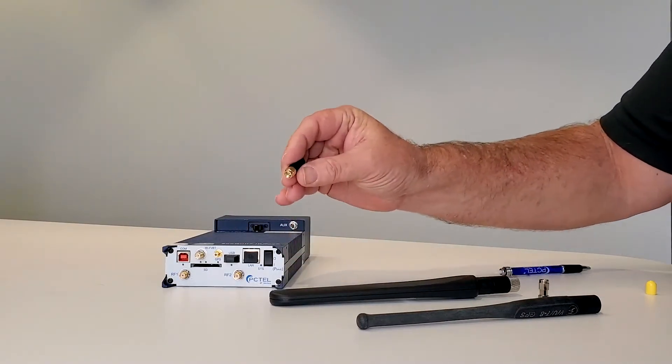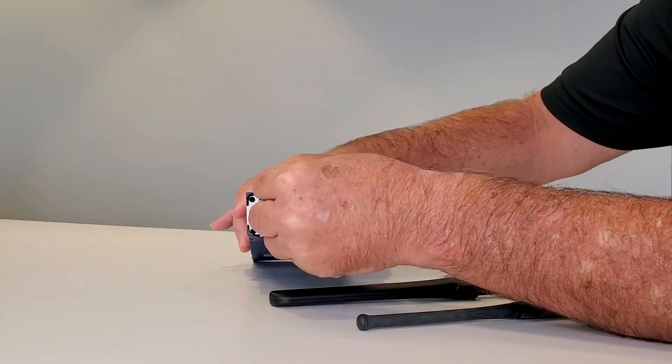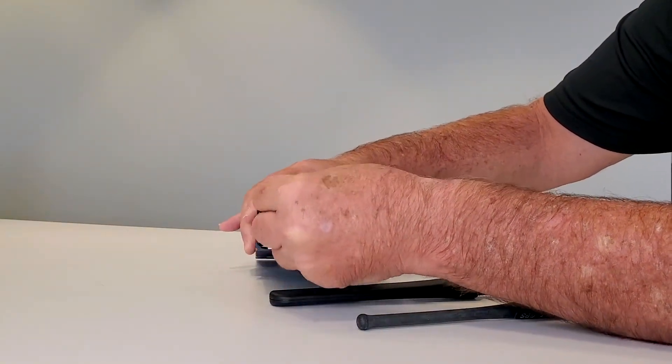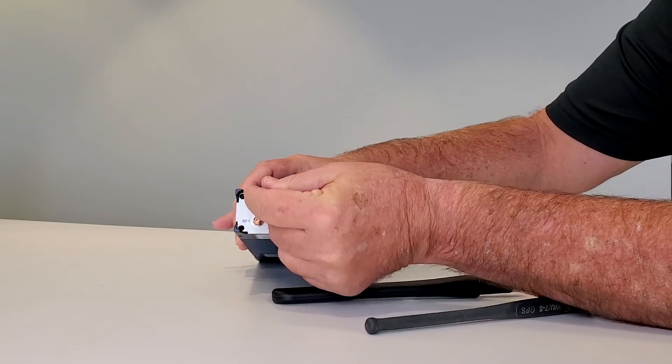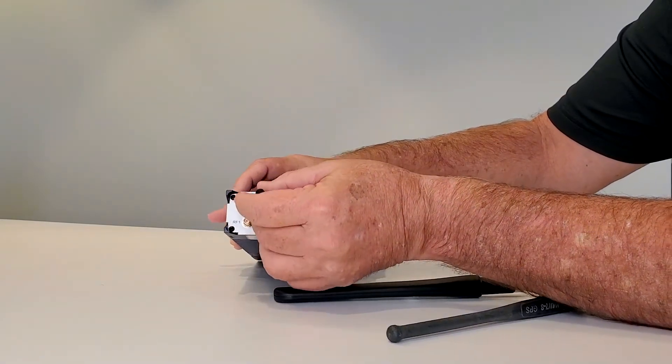I'm going to start off with my Bluetooth antenna. Place that on my antenna port, and we just want to tighten it finger-tight.